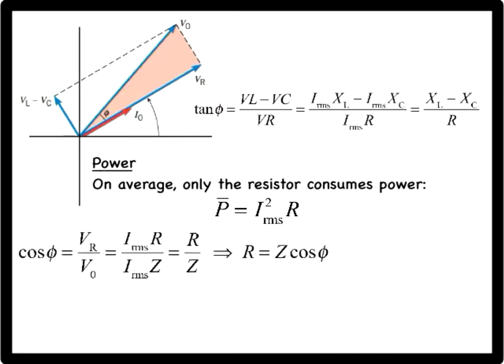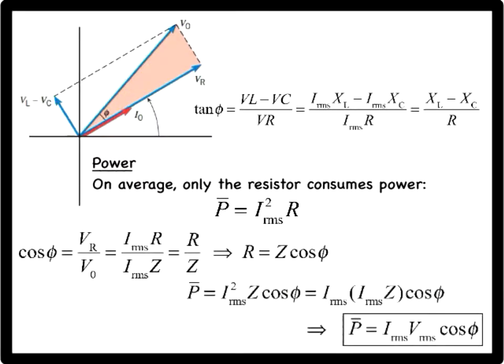This allows us to write the resistance R in terms of the impedance. Making this substitution into the expression for the average power, we get the following. The term cosine φ is called the power factor of the circuit.